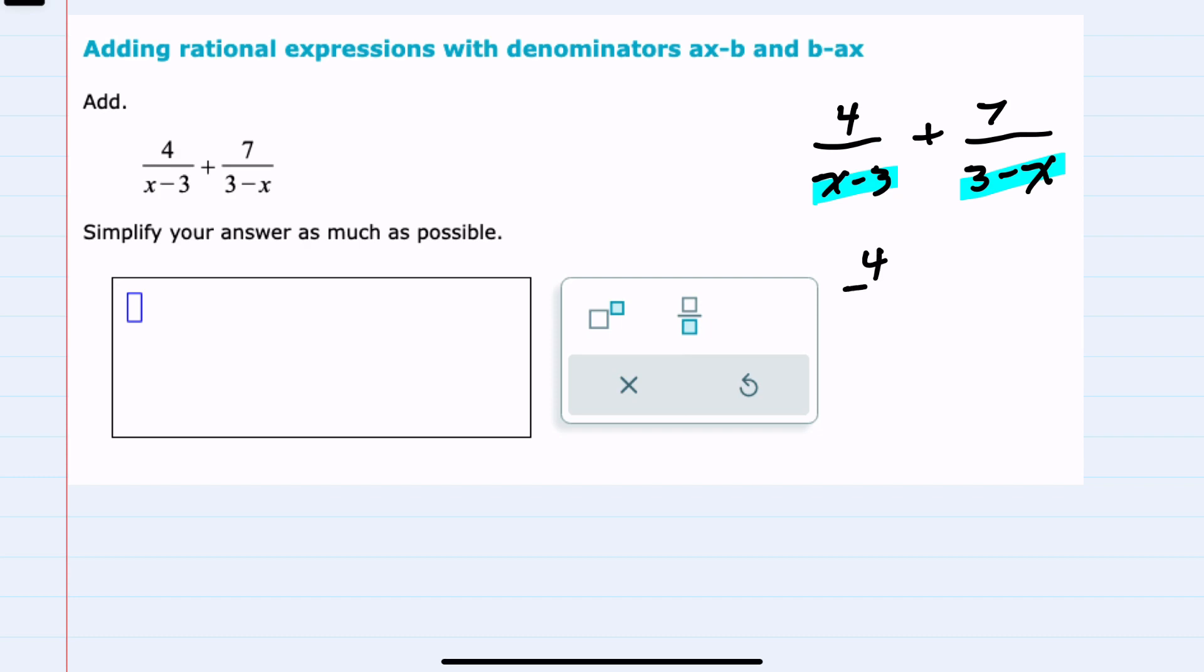However, on that right-hand side, the 3 minus x, we can recall that factoring out a negative, say negative 1, would make the x part become positive, and I can write that first, and factoring out a negative would make that positive 3 become negative, and we can see that that has an effect of changing the order of subtraction.